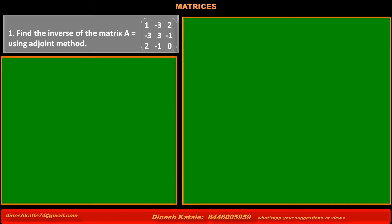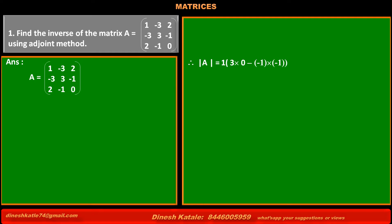Problem one: find the inverse of the matrix A, which is equal to a matrix of order 3 by 3 having elements 1, -3, 2, -3, 3, -1, 2, -1, 0, using the adjoint method. First we have to write matrix A as it is. To check whether A inverse exists, we have to first find the determinant of A.